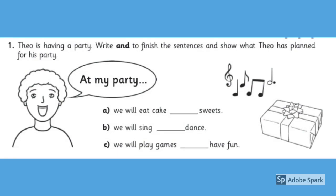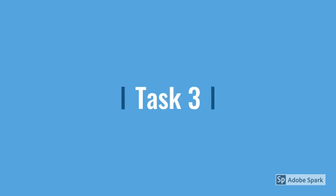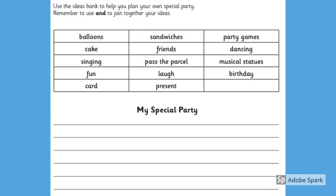Theo is having a party. Write 'and' to finish the sentences and show what Theo has planned for his party. Task number three. Use the ideas bank to help you plan your own party. Remember to use 'and' to join together your ideas. Also remember a sentence needs a capital letter, finger spaces and full stops.